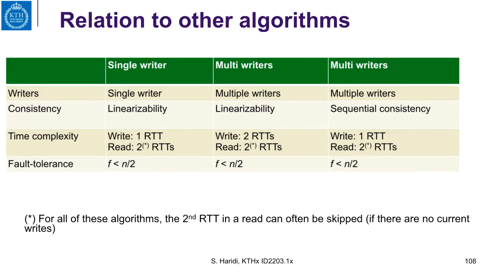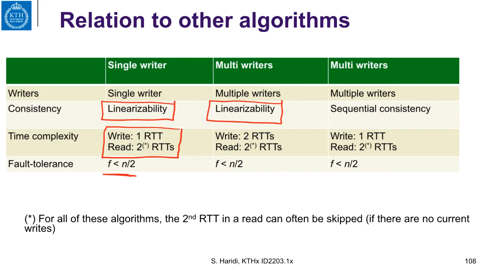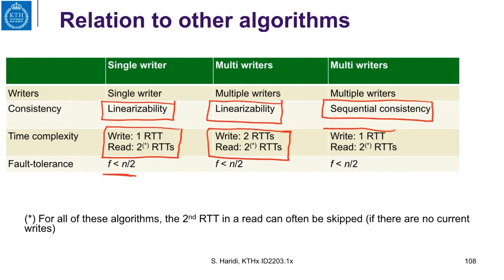To summarize this lecture: we have seen single-writer linearizable registers with a write that takes one round trip and a read that takes at most two round trips, with fault tolerance requiring a majority to survive. We have seen a linearizable multi-writer algorithm where both write and read each take two round trips. And now we have seen a sequentially consistent algorithm that gives only one round trip for writes and two round trips for reads. This is believed to be optimal.